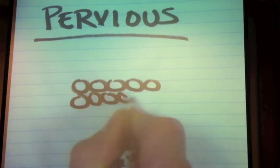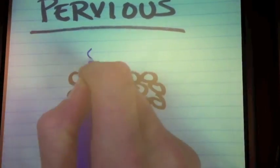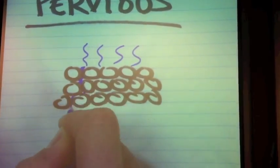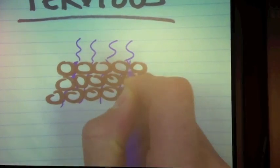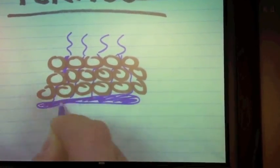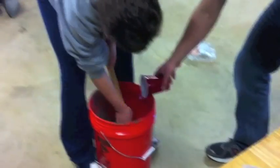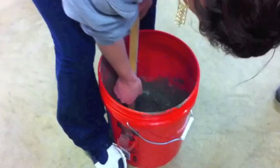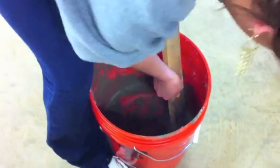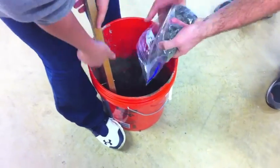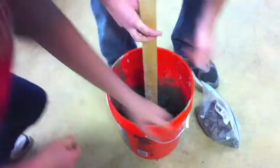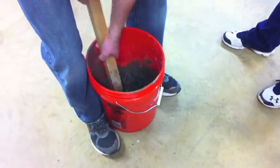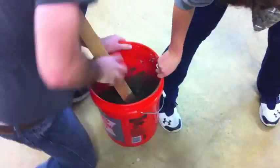In our pervious concrete mixture, we replaced sand with gravel to create air pockets in the mixture that allow water to flow through. After combining our gravel, cement, and water, we were left with a pervious mixture that was tough to work with.